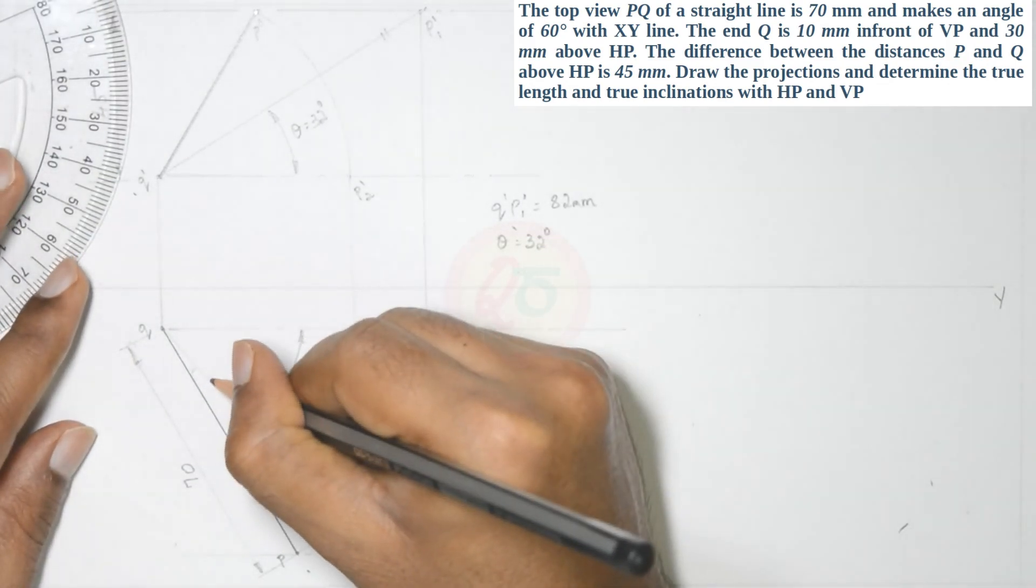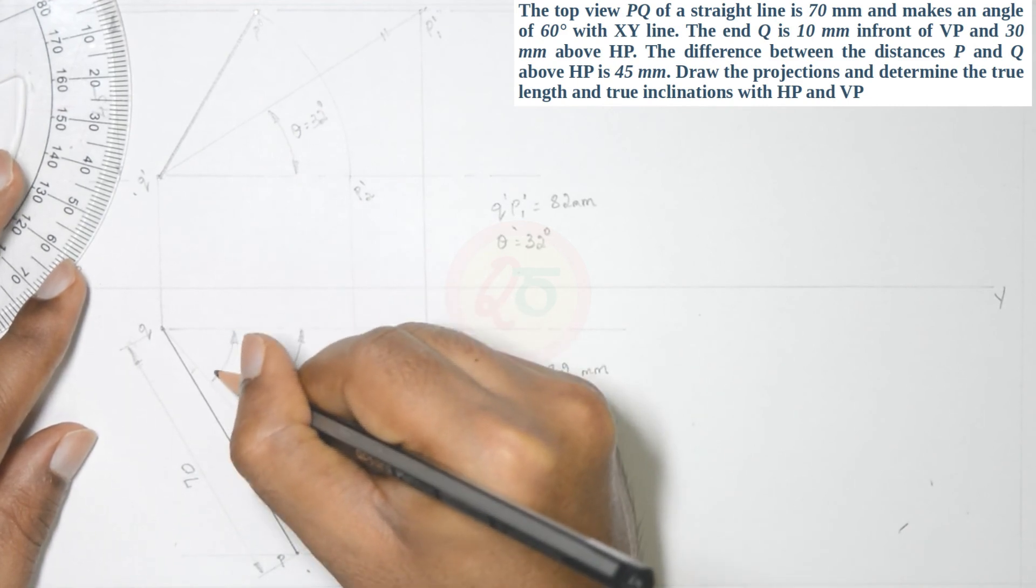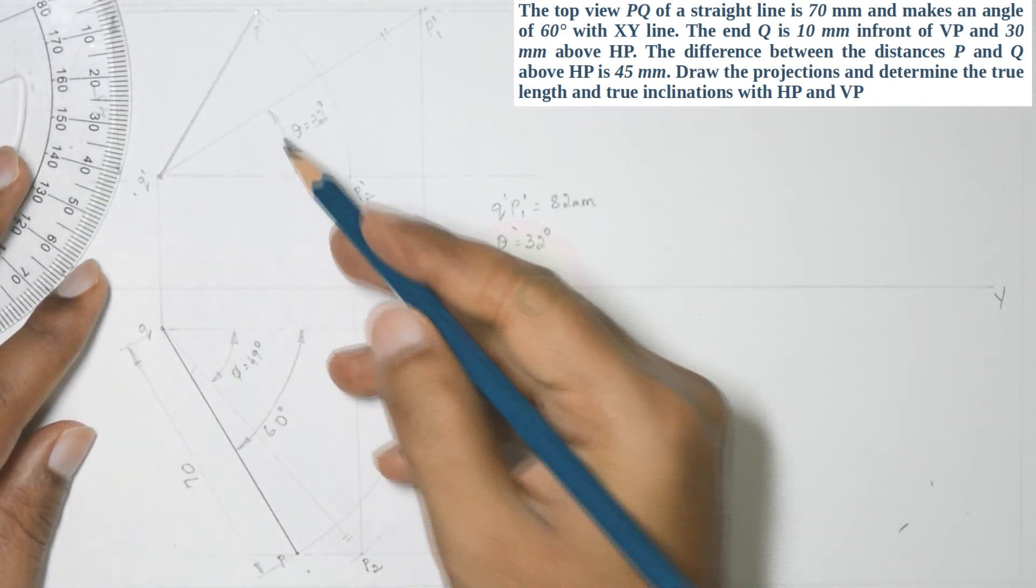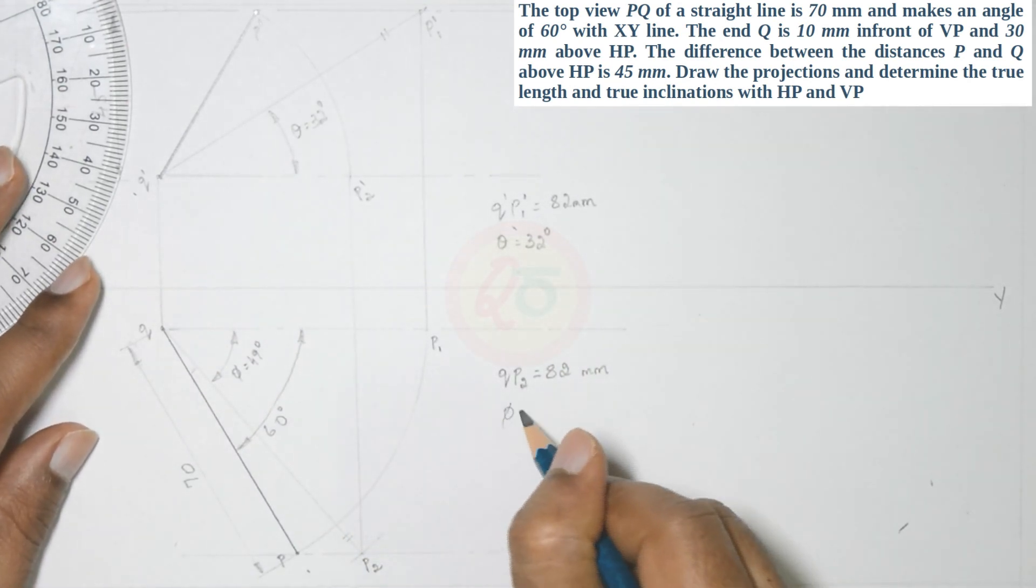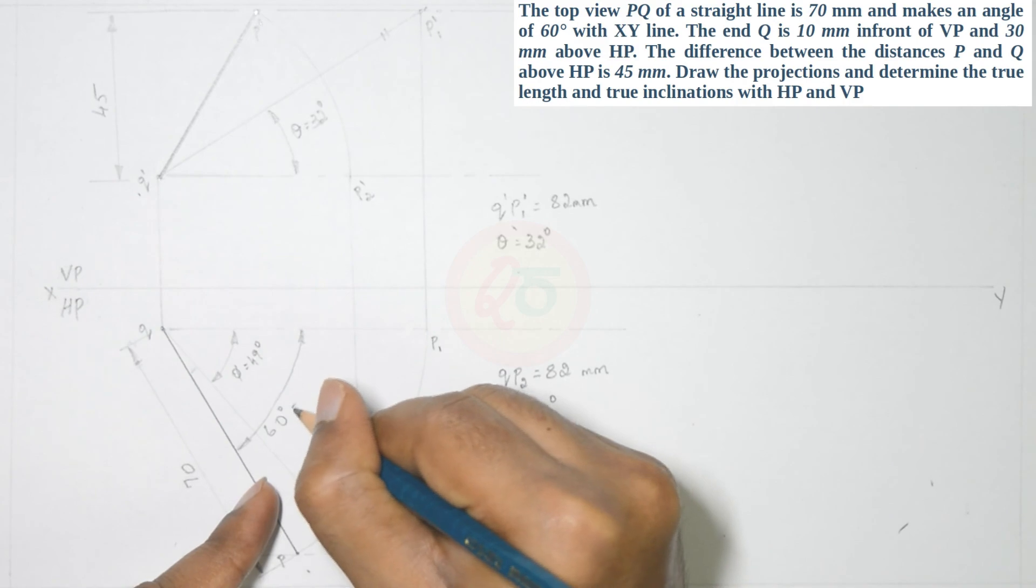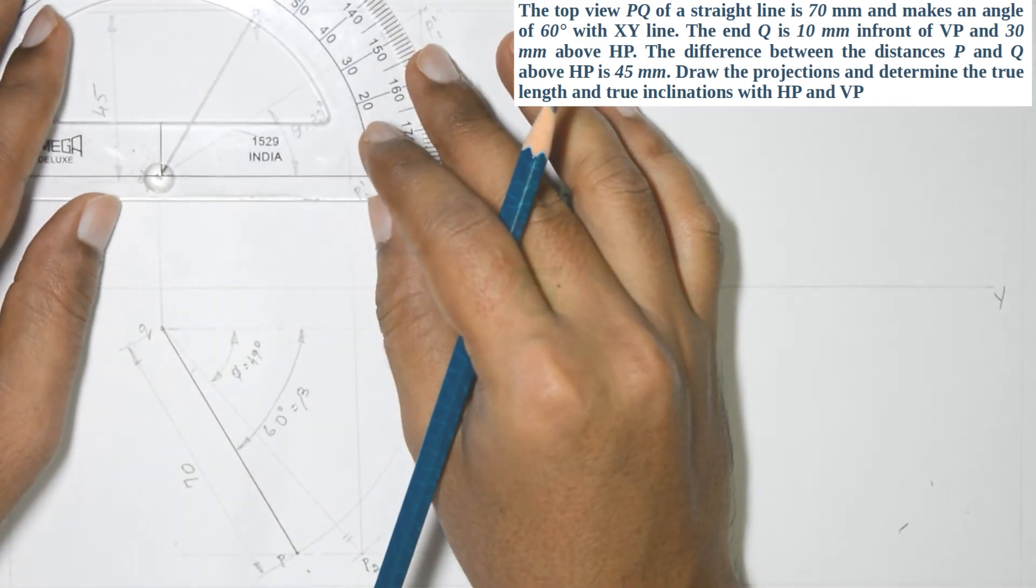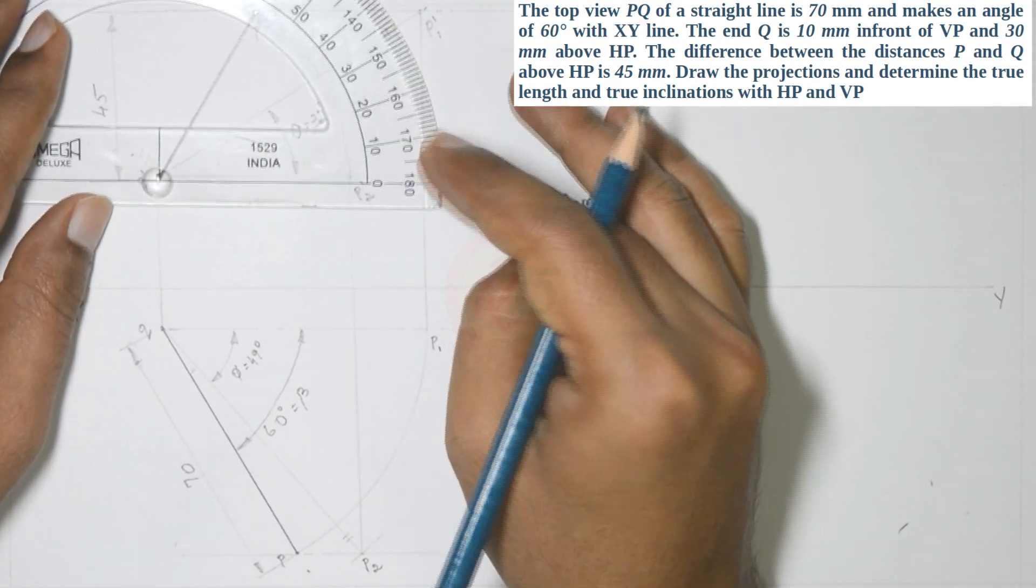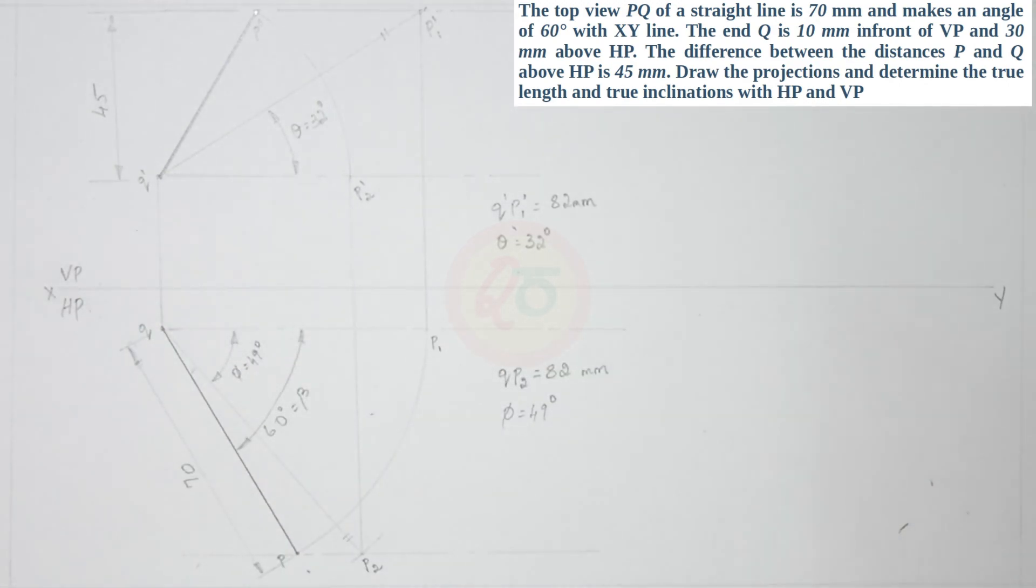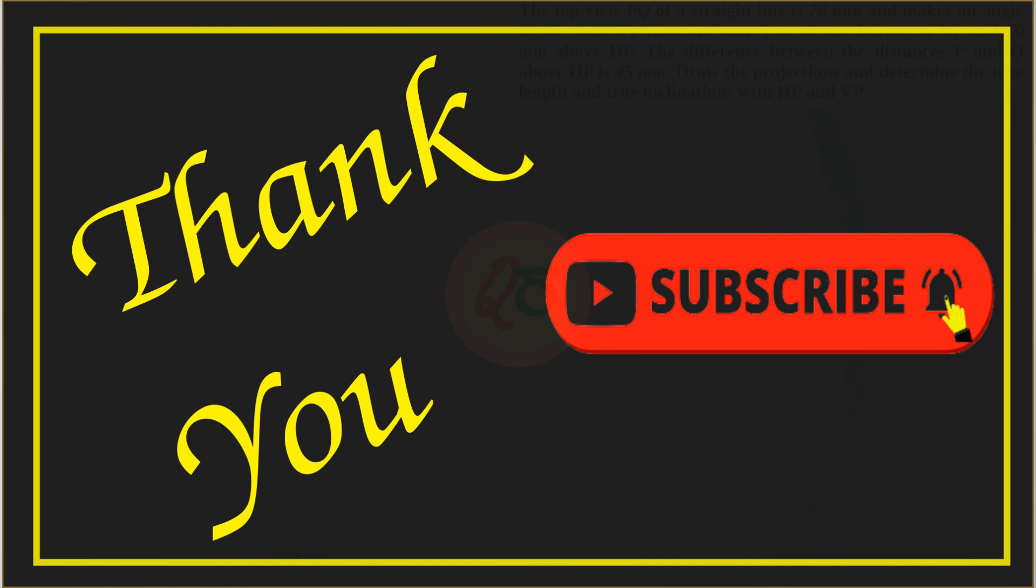The only angle that remains to be denoted: 60 degrees was the projected angle given which is nothing but your beta. This will be your alpha which is not required by the question but it is 60 degrees. So, if you want to denote it, you can denote it. With this the solution to the given problem is completed. The sessions on projection of lines are also completed. In the next session, we will take up projection of planes. Until then, please do like, share and subscribe. Thank you.